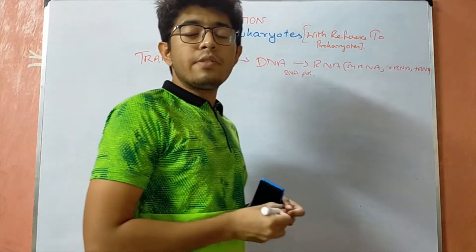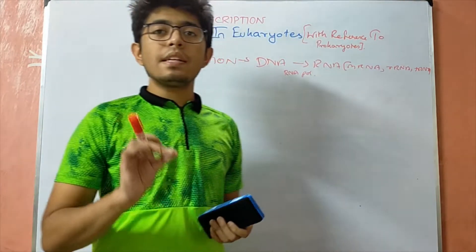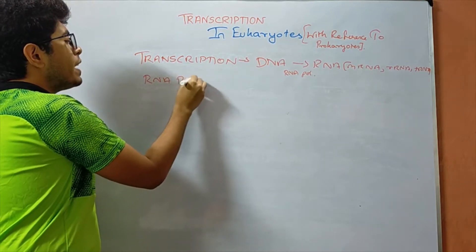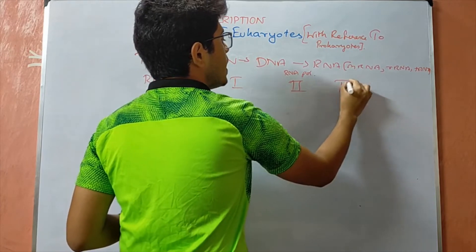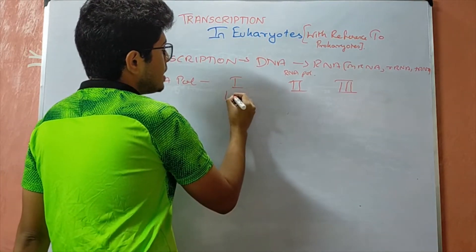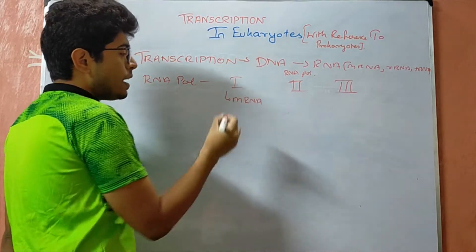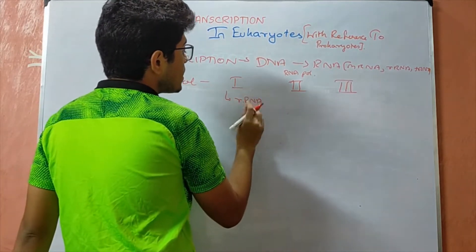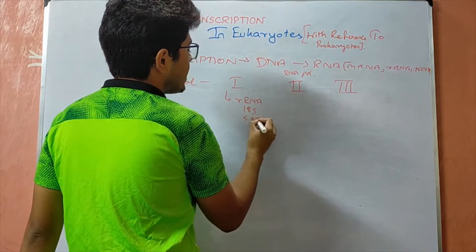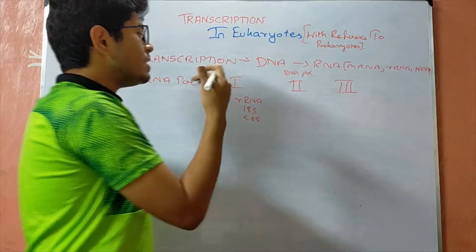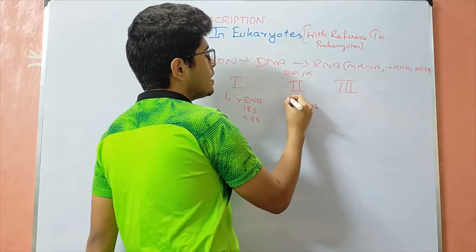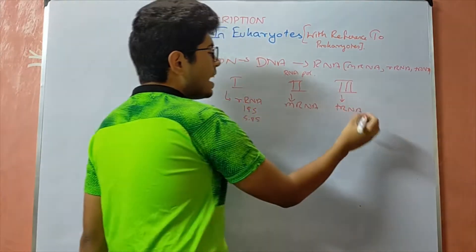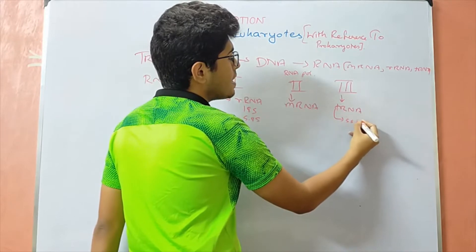In the case of prokaryotes, the RNA polymerase is basically of one type. In eukaryotes, RNA polymerase is of three types: types I, II, and III. RNA polymerase I is responsible for catalyzing the formation of rRNA, particularly the 18S and 5.8S rRNA. RNA polymerase II is responsible for catalyzing the synthesis of mRNA, and RNA polymerase III is responsible for the synthesis of tRNA and also the 5S rRNA.